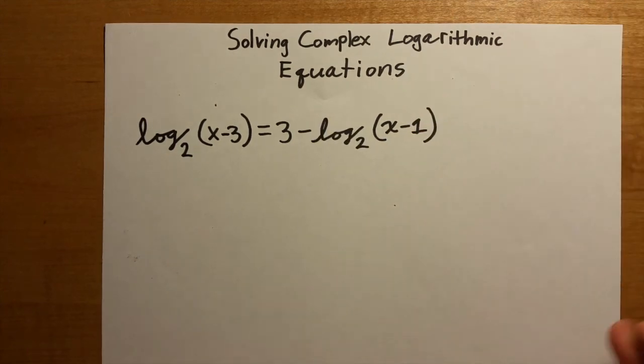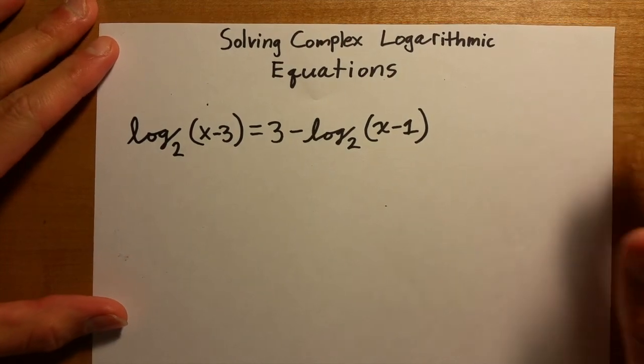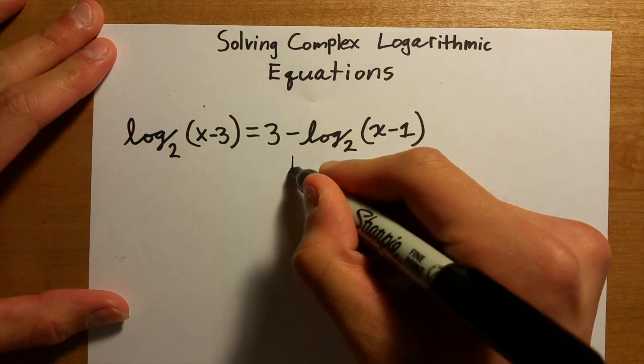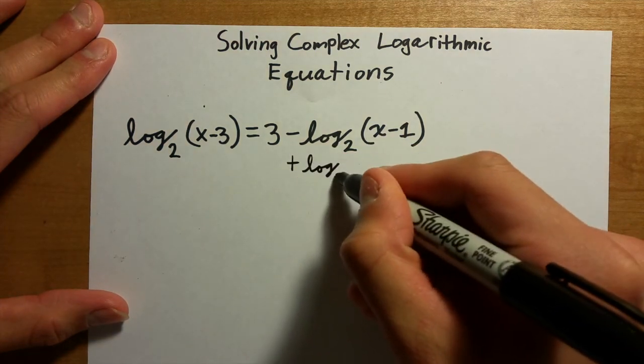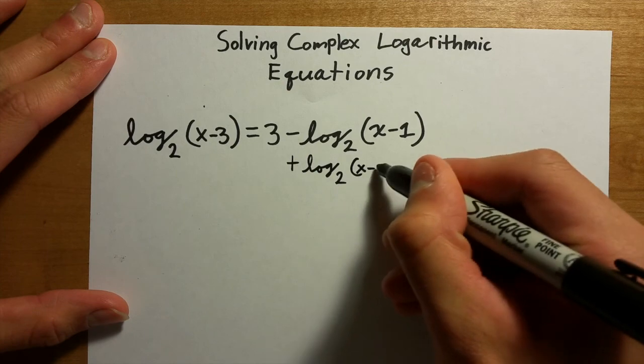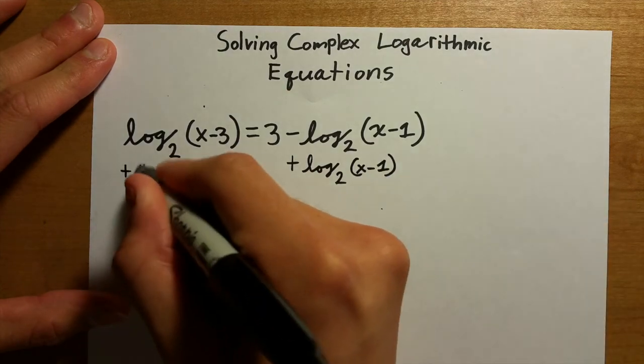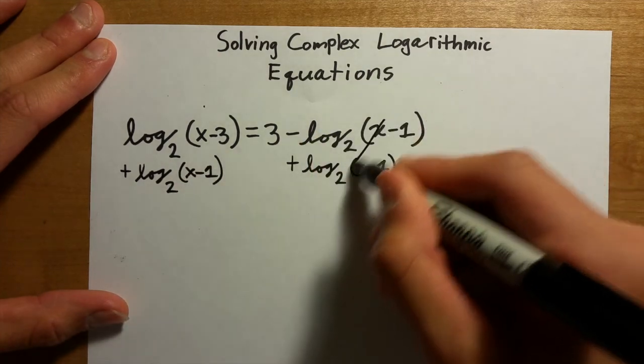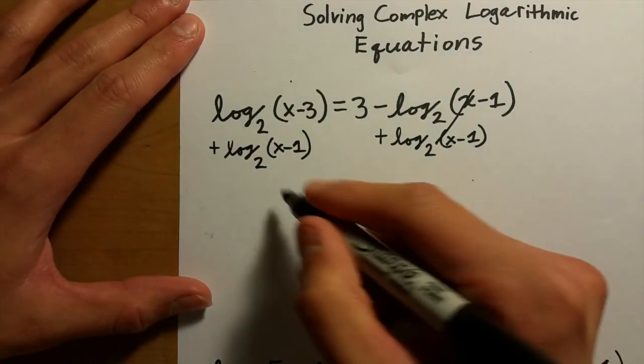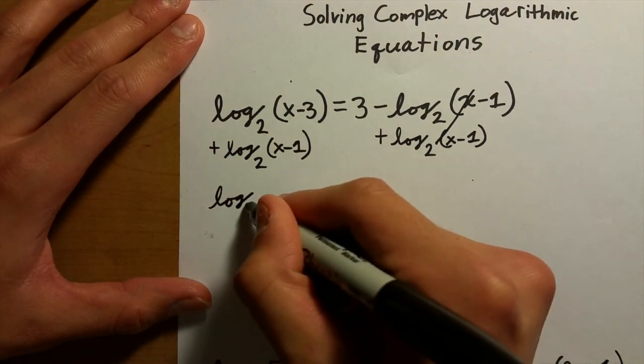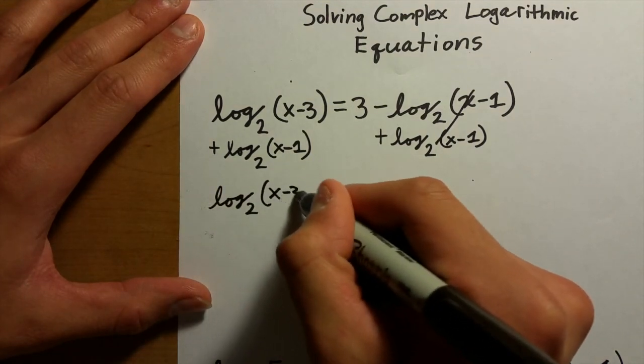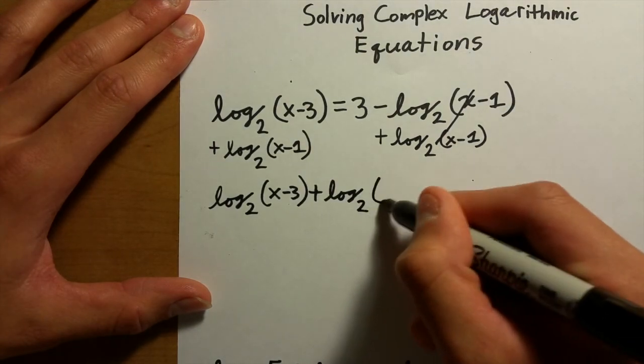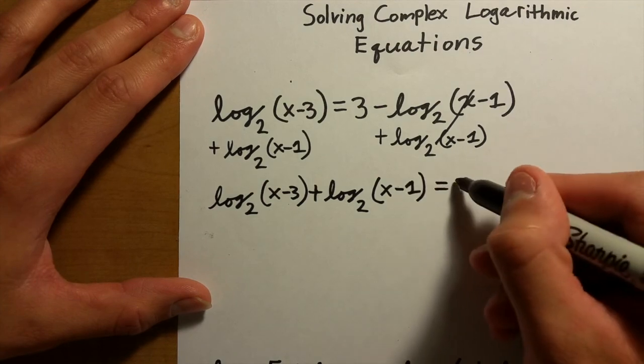You can think about it as basically just a simple algebra equation. So what you're going to want to do is add log₂(x-1) over here so it cancels out on that side, and you can rewrite it as log₂(x-3) + log₂(x-1) = 3.